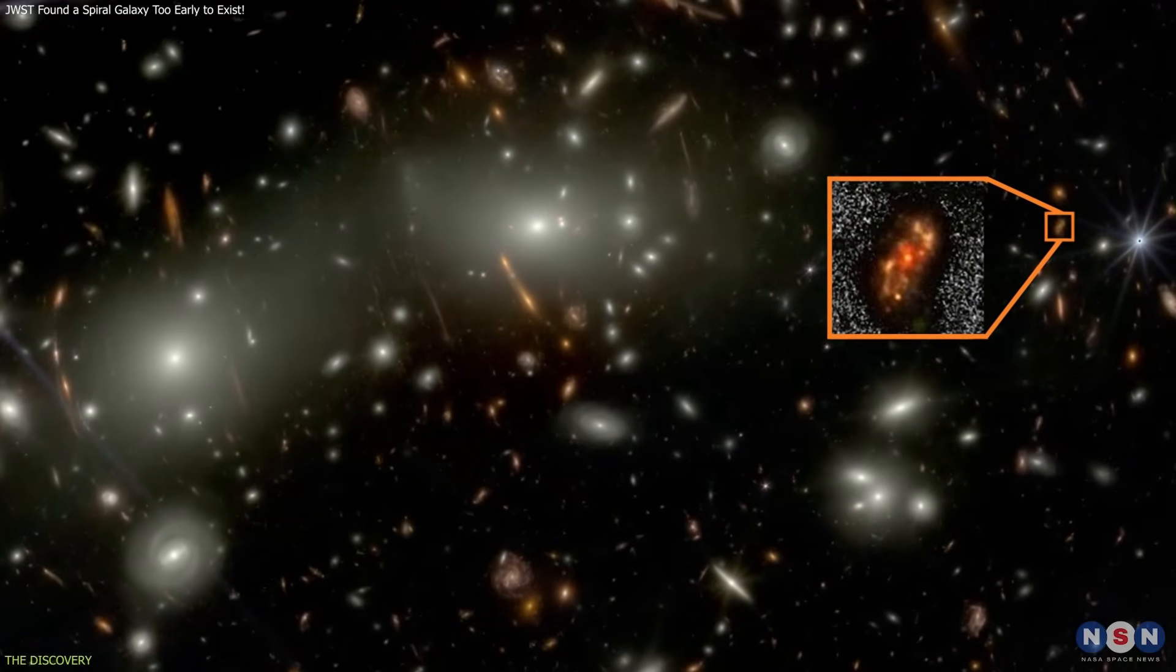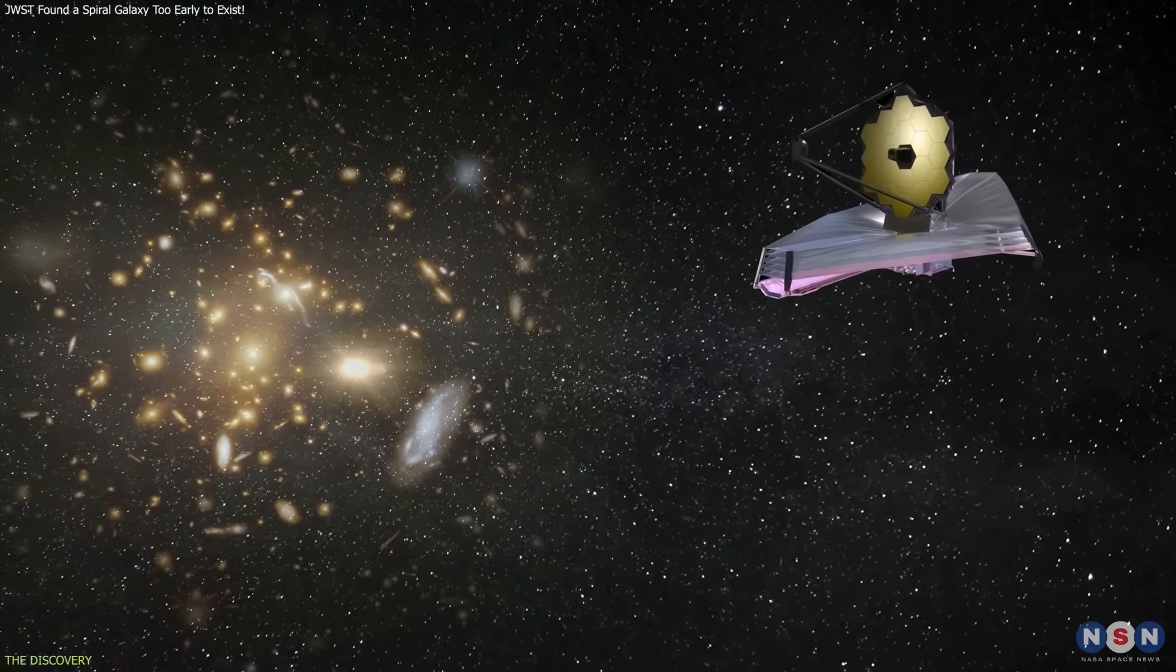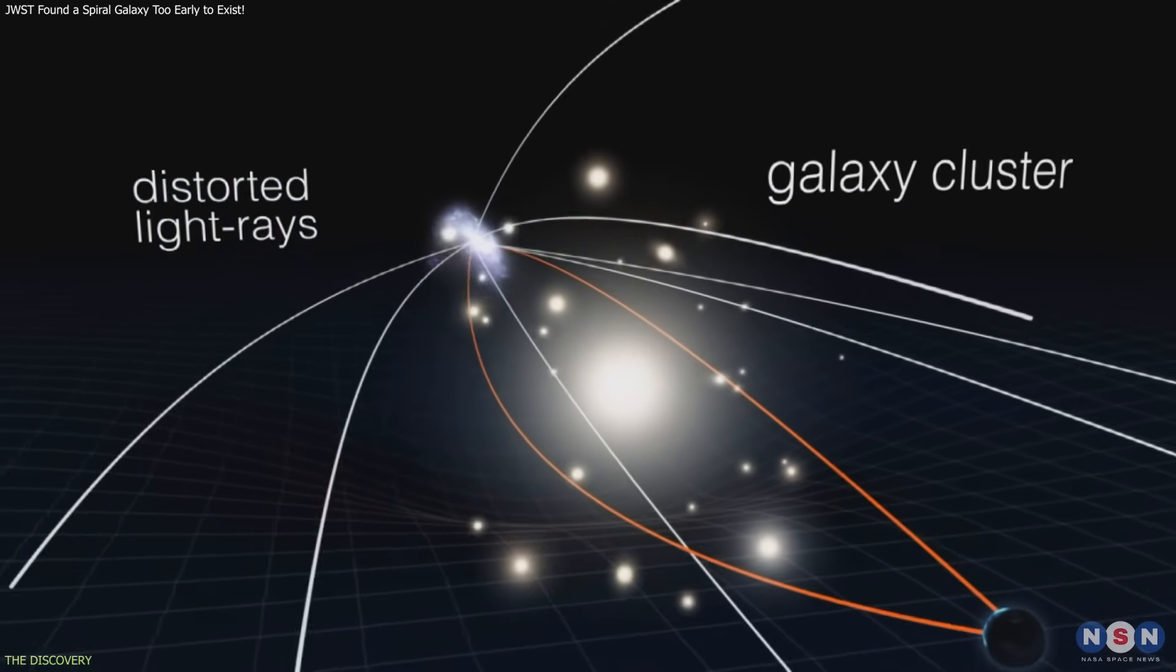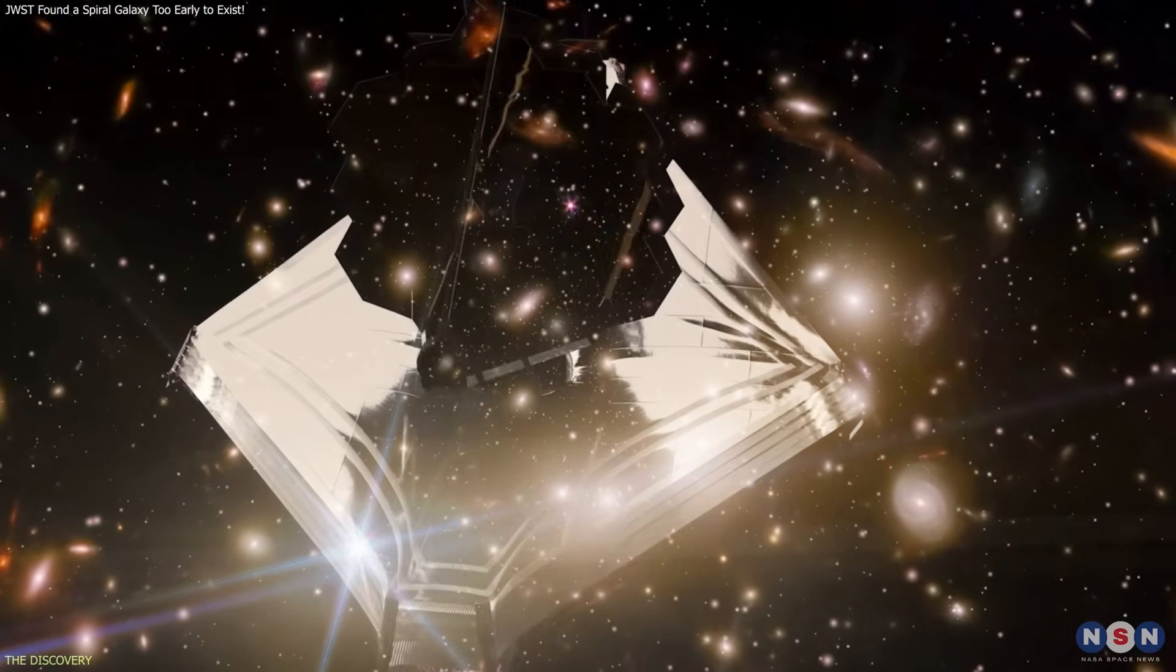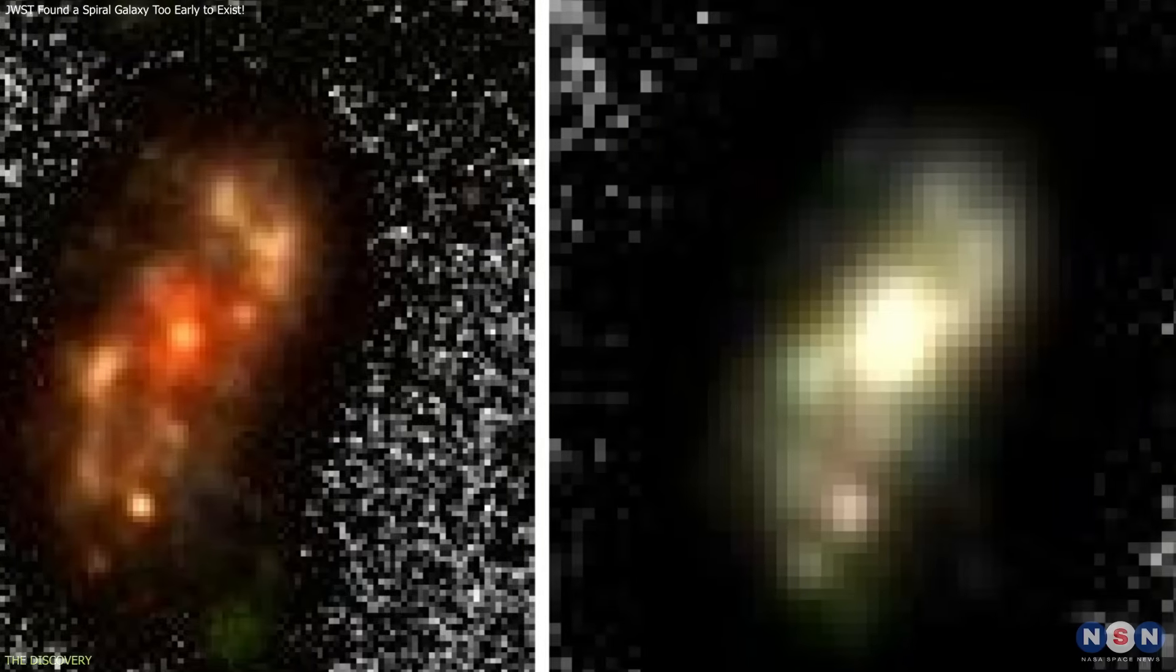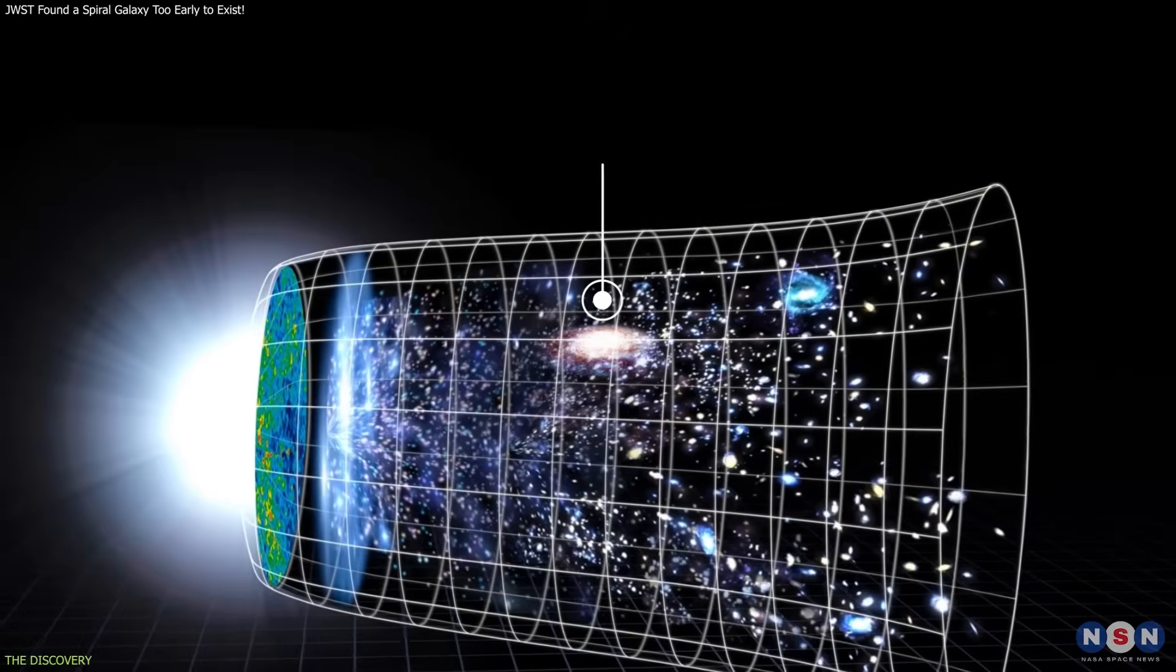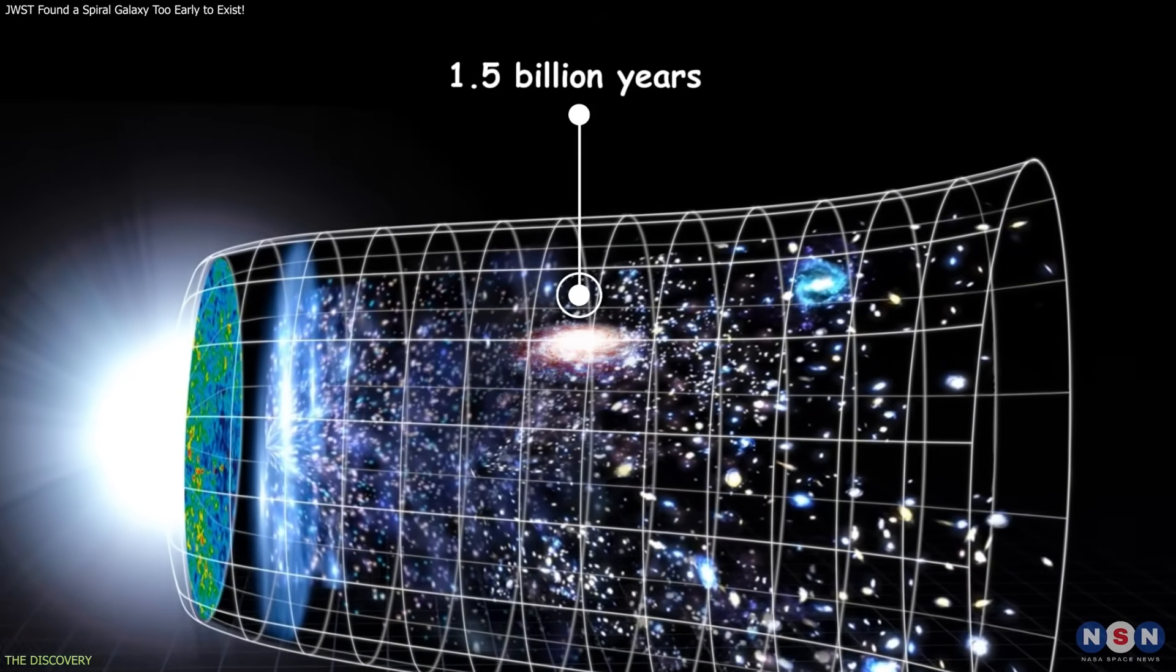Alec Nanda was discovered while JWST was observing a field behind the galaxy cluster ABL 2733. The cluster's gravitational lensing magnified the light from galaxies behind it, allowing JWST to resolve details that would otherwise be far too faint. At a redshift of about z approximately 4, Alec Nanda appears as it was when the universe was roughly 1.5 billion years old.